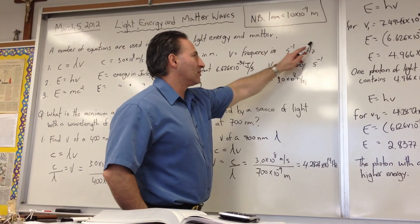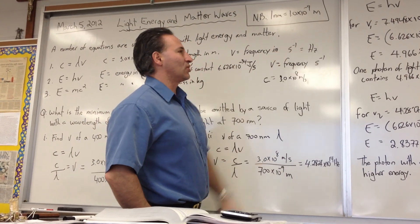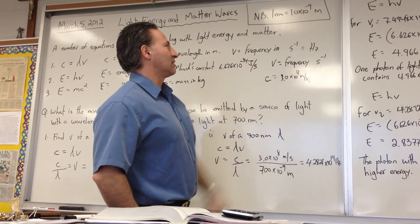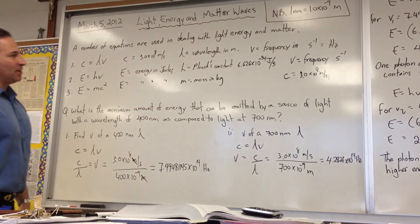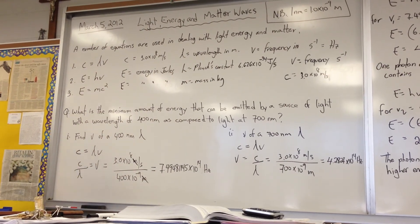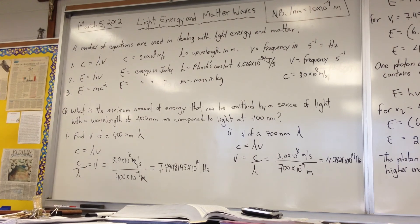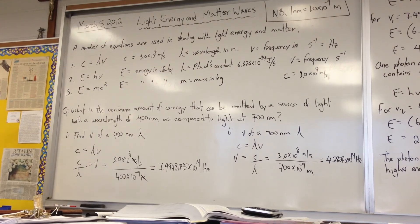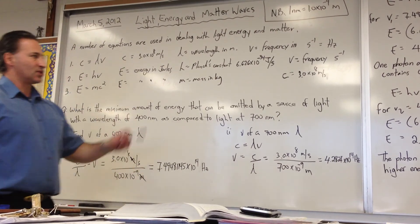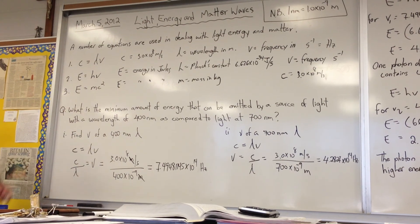That unit can be written as hertz. Hertz is seconds to the minus one, and it means the number of cycles per second for a frequency of light, or even the vibration of a guitar string. For example, we tune A at 440 hertz, meaning the string vibrates 440 times per second.